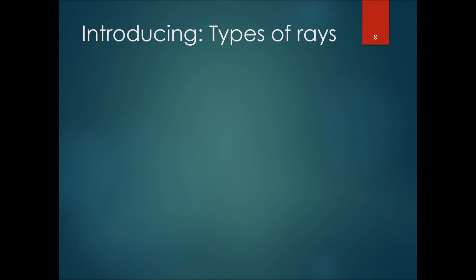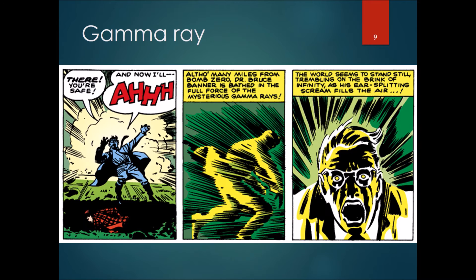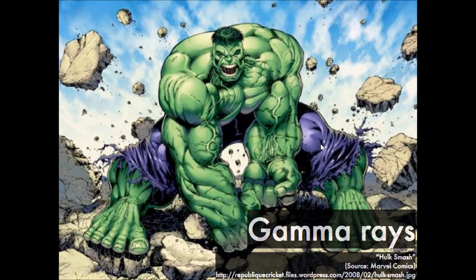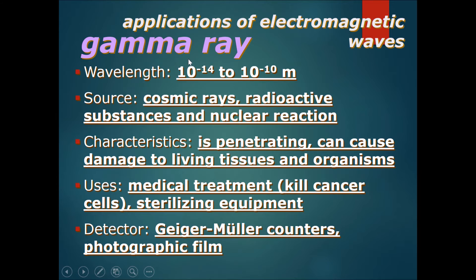Let's introduce the different types of rays. Gamma rays themselves are very real. For gamma rays, the wavelength is very short — it's the shortest of all the wavelengths. Because the wavelength is very short, the frequency is very high, and the energy of gamma rays is very high.